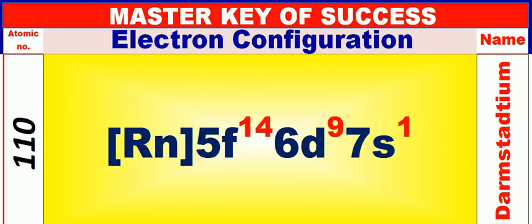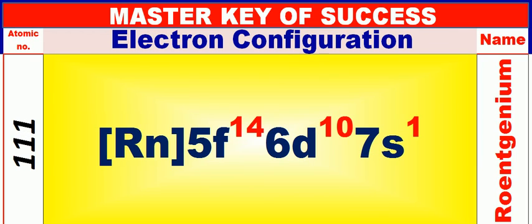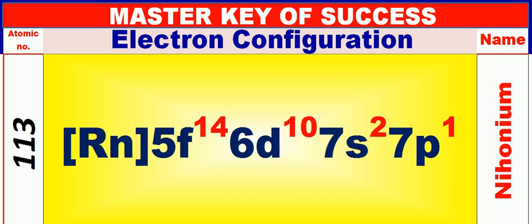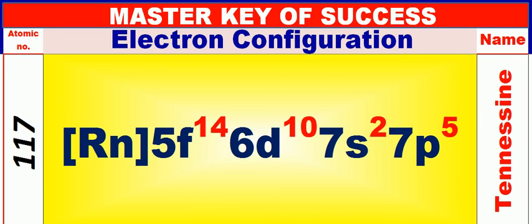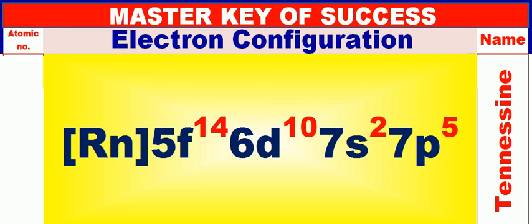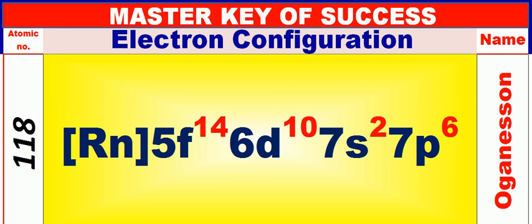Atomic number is 110 and name of atom is [not stated]. Atomic number is 111 and name of atom is [not stated]. Atomic number is 112 and name of atom is [not stated]. Atomic number is 113 and name of atom is [not stated]. Atomic number is 114 and name of atom is [not stated]. Atomic number is 115 and name of atom is Muscovium. Atomic number is 116 and name of atom is Liver Morium. Atomic number is 117 and name of atom is Tennesseen. Atomic number is 118 and name of atom is Oganesson.